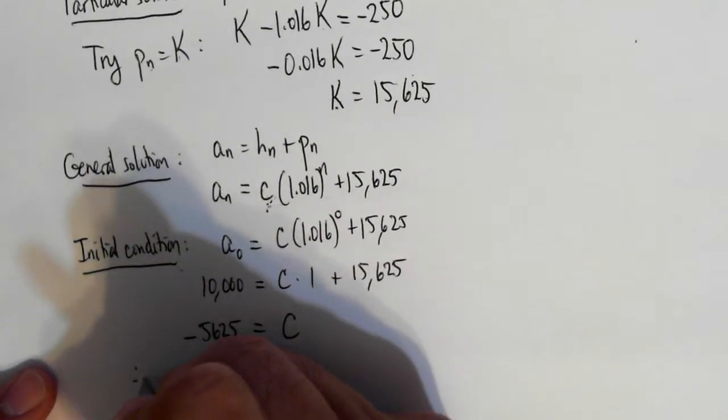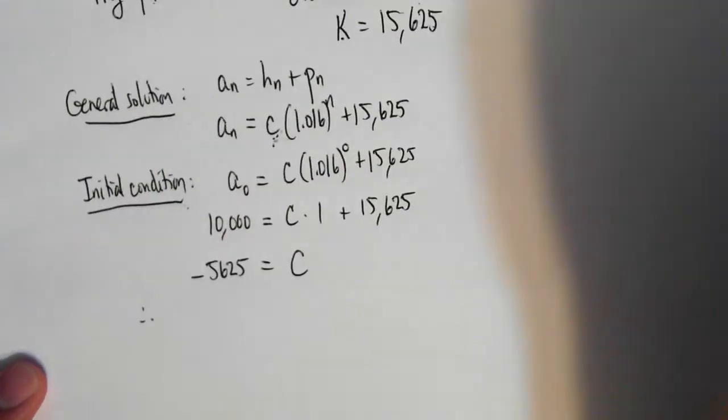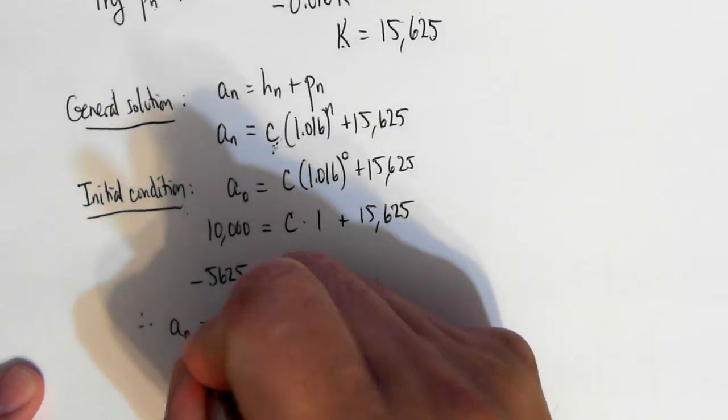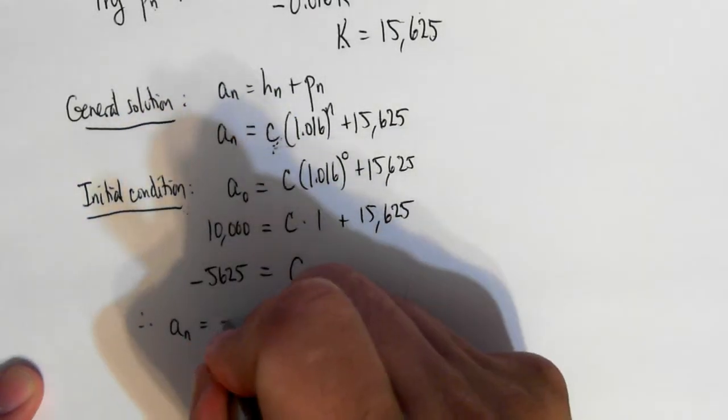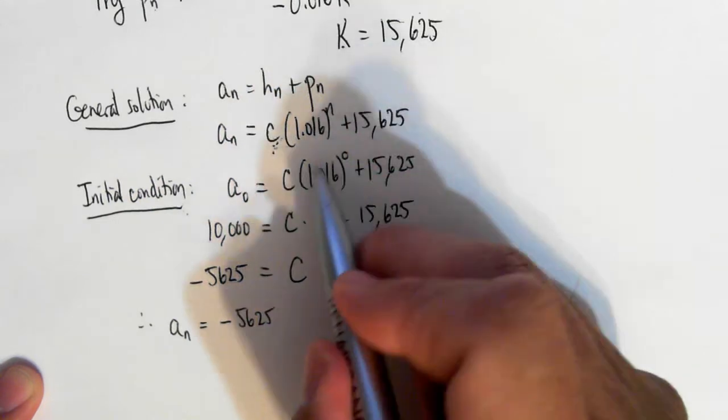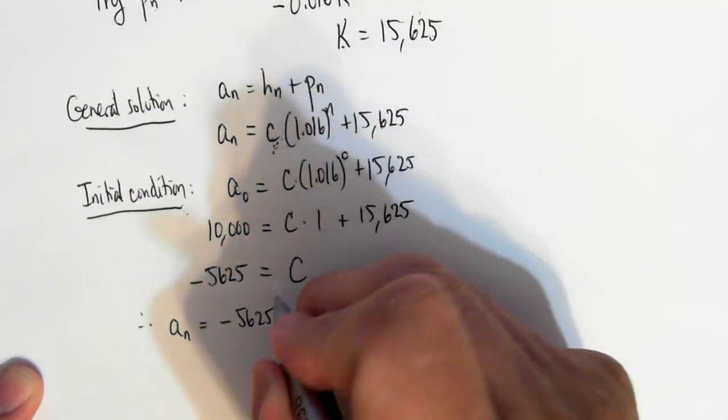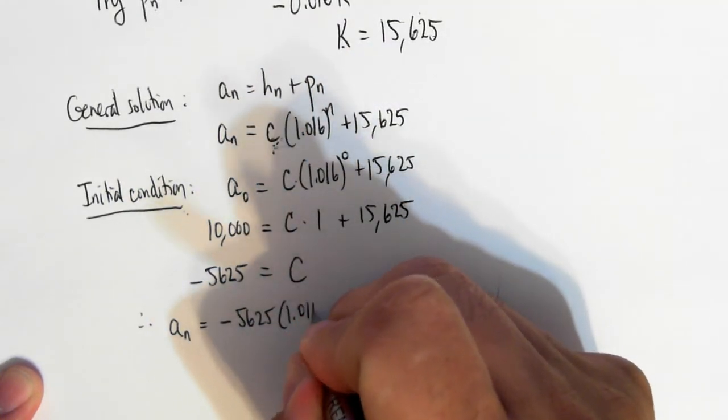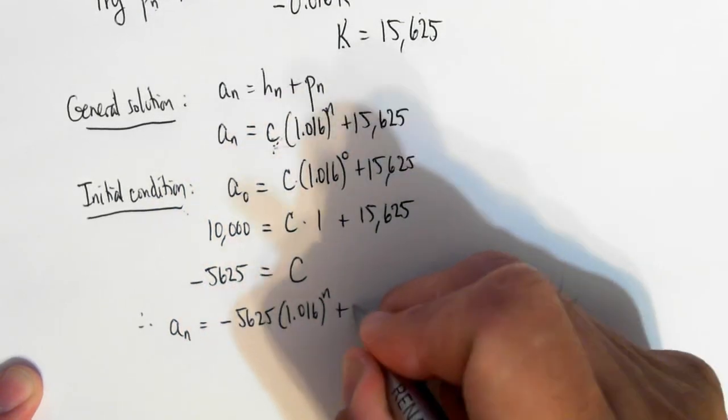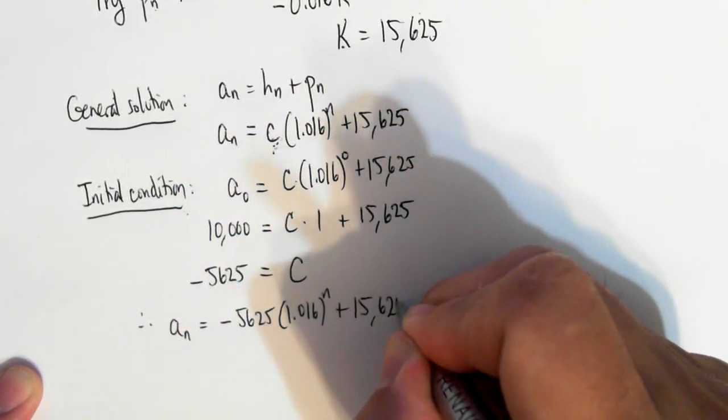And so there's our general solution, a_n will be equal to negative 5,625, there's my c, times 1.016 to the nth power plus 15,625.